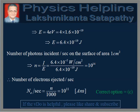It is given that 1 in 1000 photons will eject electrons. Therefore, the number of electrons ejected per second = N/1000 = 10¹¹, which is the answer to the question. Therefore, the correct option is C. This completes the answer to the question.